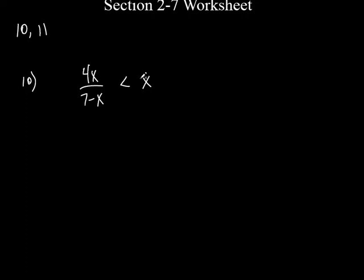Remember what we want on the right-hand side here? We want a 0 over here. So we have to get rid of this x. We get rid of that x by subtracting an x from this side, and we have to subtract an x from this side.